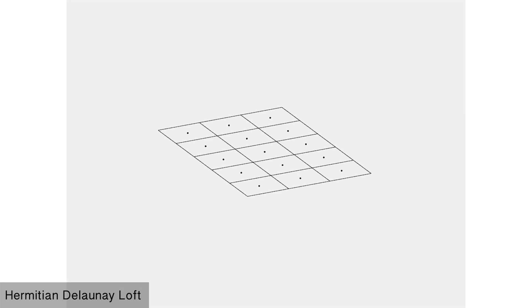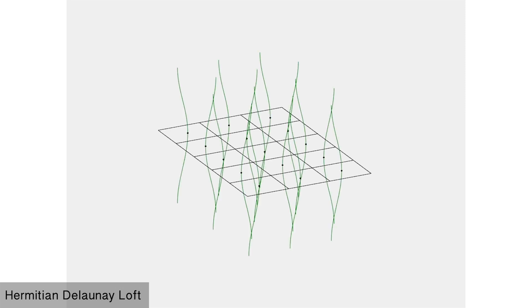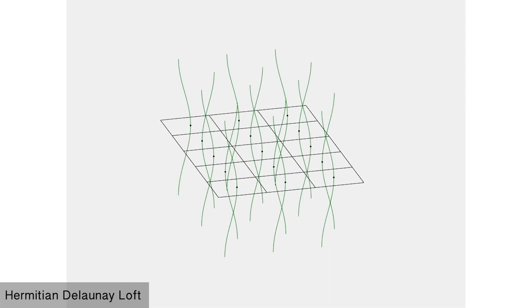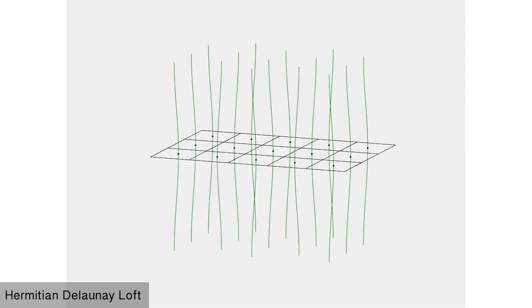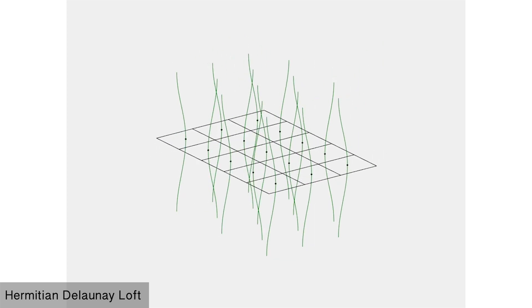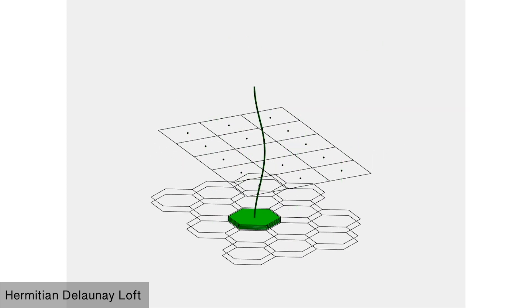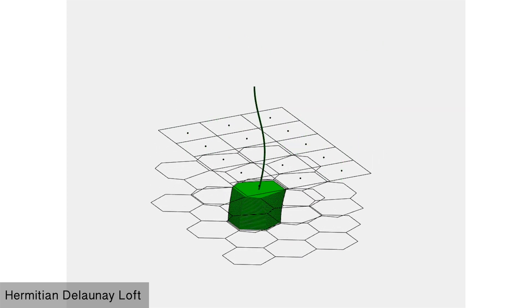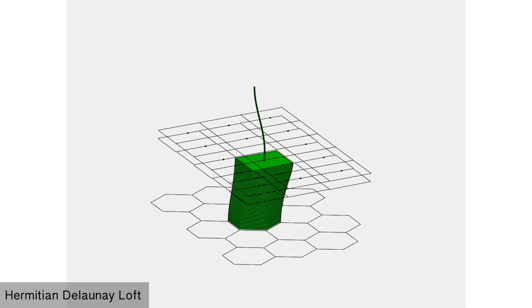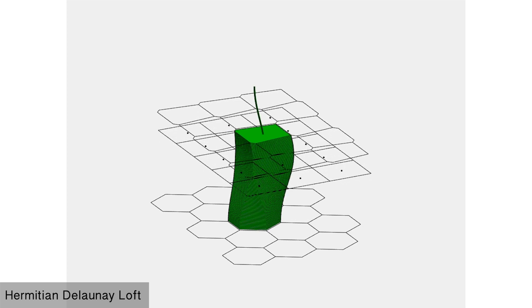The results can also be extended from straight control curves to non-linear curved control curves, such as circular, cosine, or even Hermitian curves. This creates unusual free-form, tileable shapes.